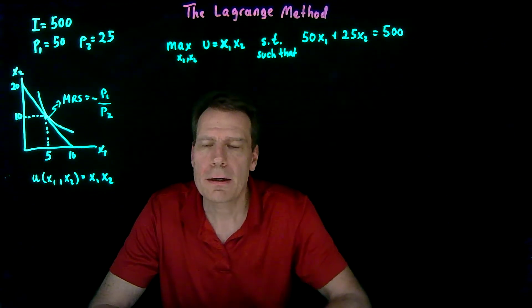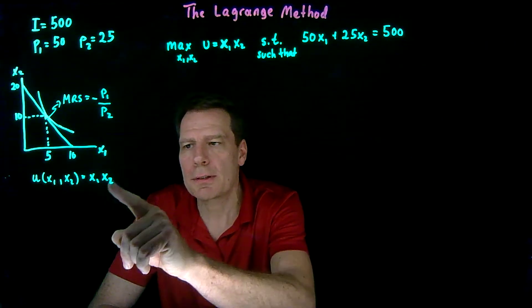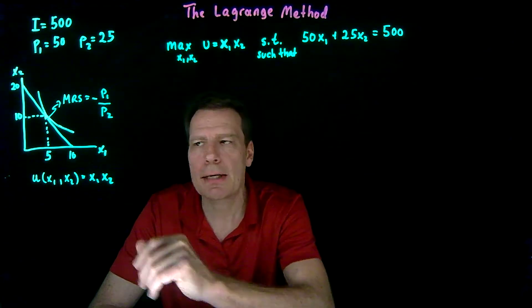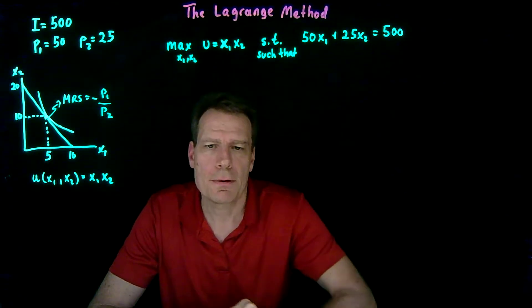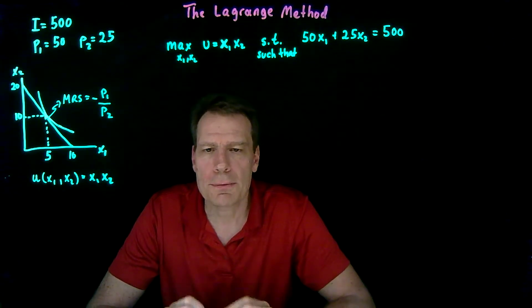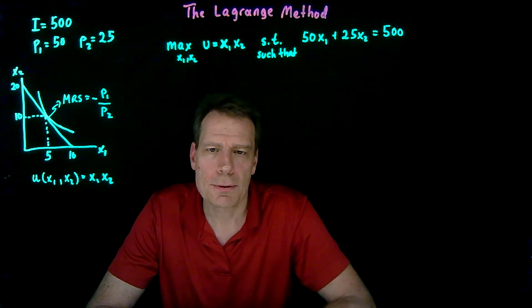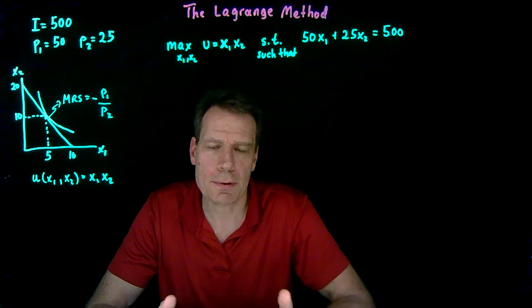We've now seen a way of calculating this optimal bundle once you're given a utility function that represents the underlying indifference map for this consumer. The advantage of that way of doing it was that we didn't have to use any multivariable calculus. You simply had to take a single variable derivative.